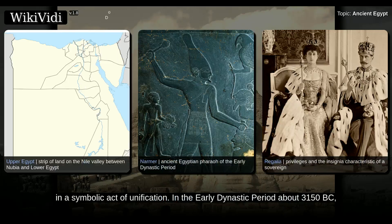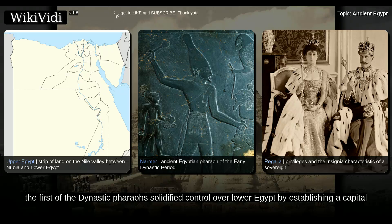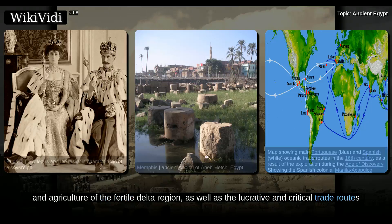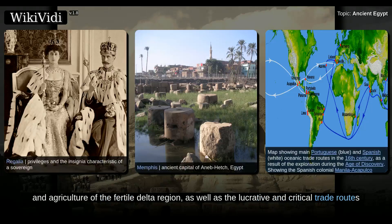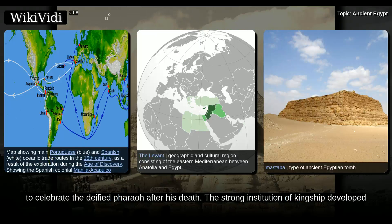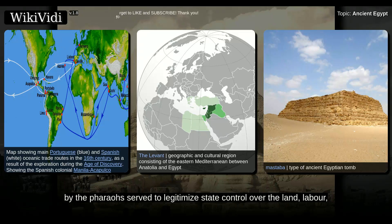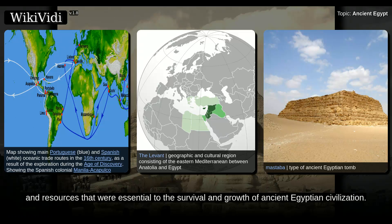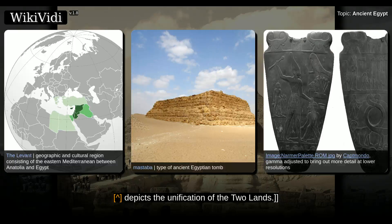In the Early Dynastic Period about 3150 BC, the first of the dynastic pharaohs solidified control over Lower Egypt by establishing a capital at Memphis, from which he could control the labor force and agriculture of the fertile delta region, as well as the lucrative and critical trade routes to the Levant. The increasing power and wealth of the pharaohs during the Early Dynastic Period was reflected in their elaborate mastaba tombs and mortuary cult structures at Abydos, which were used to celebrate the deified pharaoh after his death. The strong institution of kingship developed by the pharaohs served to legitimize state control over the land, labor, and resources that were essential to the survival and growth of ancient Egyptian civilization.